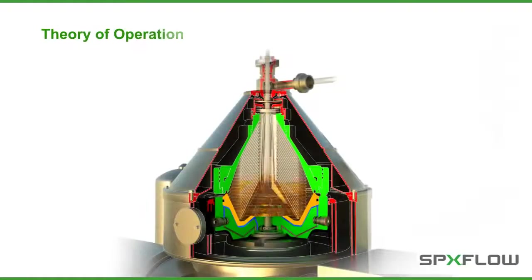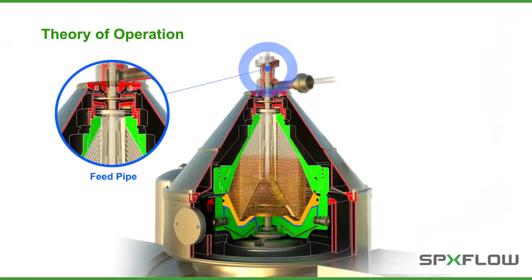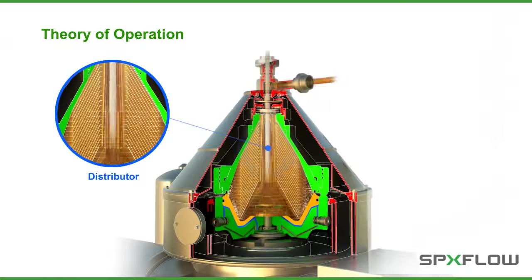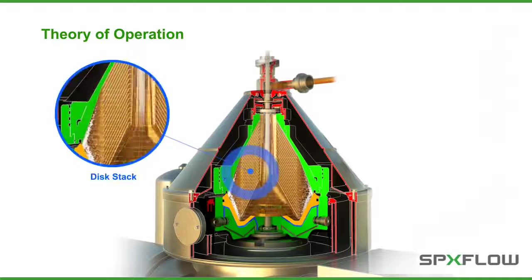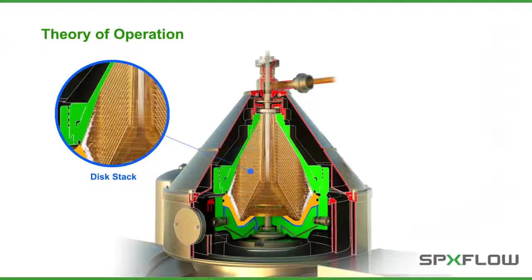The product flows into the bowl through a feed pipe and into the distributor where it is accelerated until it reaches the bowl's rotating speed. The distributor then conveys the product to the disc stack where the clarification process takes place.